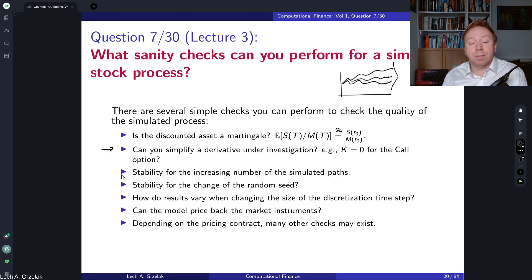And then of course, stability with respect to increased number of Monte Carlo paths and stability of the change of the random seeds. So how much difference do you have if you repeat your simulation, but with a different random seed? This information is also very important.